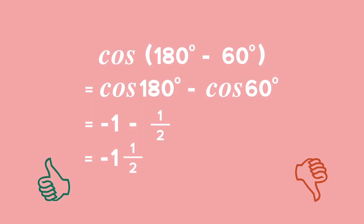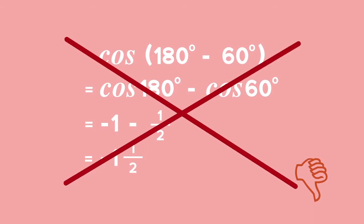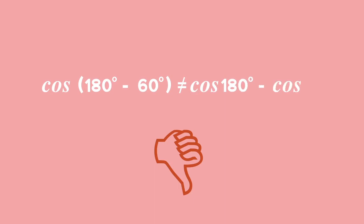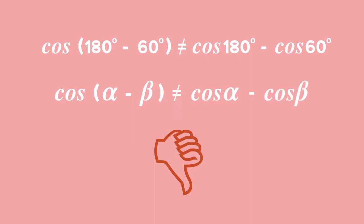The distribution of cos into the brackets is incorrect. A trigonometric ratio cannot be distributed to the angles that lie within the brackets. So cos of (180 degrees minus 60 degrees) is not equal to cos 180 degrees minus cos 60 degrees. Hence, we can conclude that cos(alpha minus beta) will not equal cos alpha minus cos beta.